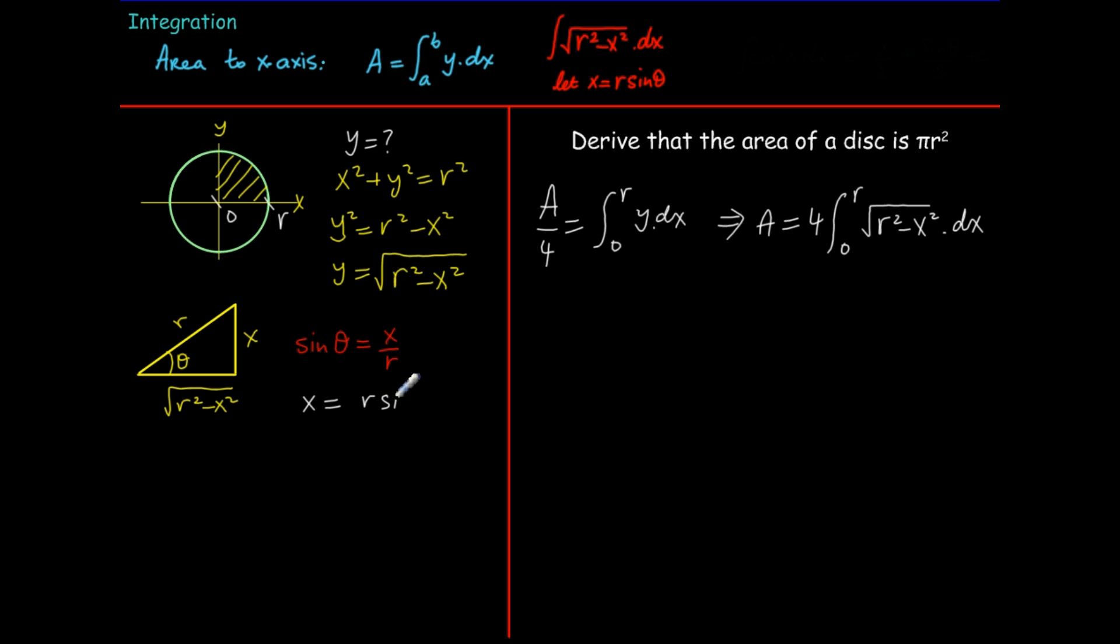So instead of x we want to use r sine theta and in the same way the adjacent side square root of r squared minus x squared is equal to r cos theta. Now since we're doing a substitution here, if x is r sine theta, dx d theta is r cos theta.